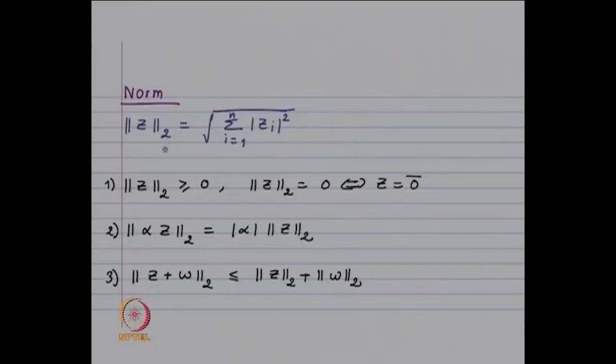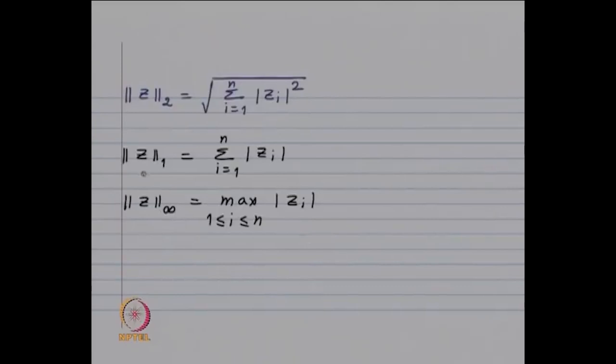Analogously, one defines the 1-norm: ‖z‖₁ = Σ|zᵢ|, and the infinity norm: ‖z‖∞ = max|zᵢ| for 1 ≤ i ≤ n. In the definition there is no difference from the real case — instead of real numbers we have complex numbers, but we take their modulus. For the 2-norm we take Σ|zᵢ|², and this modulus is important: for real vectors |xᵢ|² = xᵢ², but for complex numbers we must take the modulus squared.